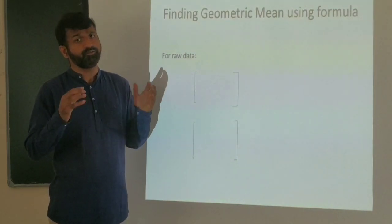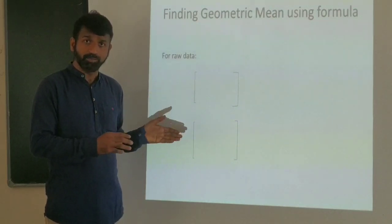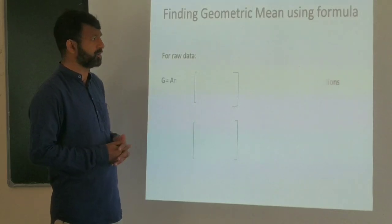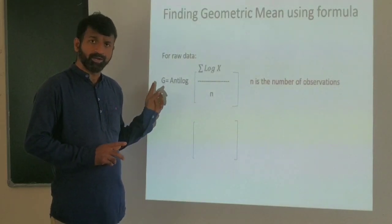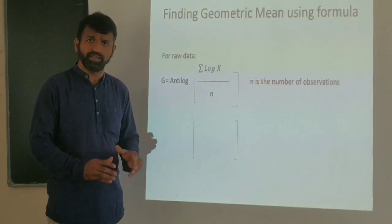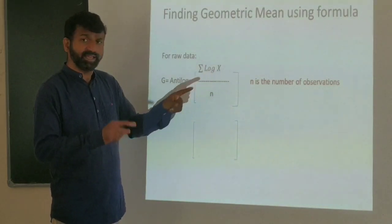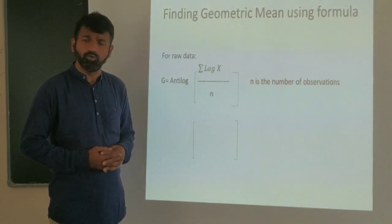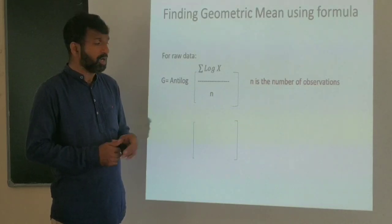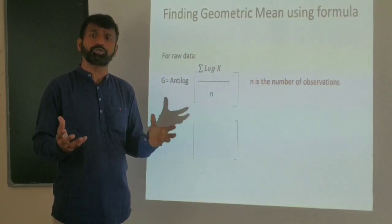Let me first teach you the formula for geometric mean computation for raw data. The geometric mean G is equal to antilog of the sum of log X divided by n, where n is the number of observations and X represents the data values.